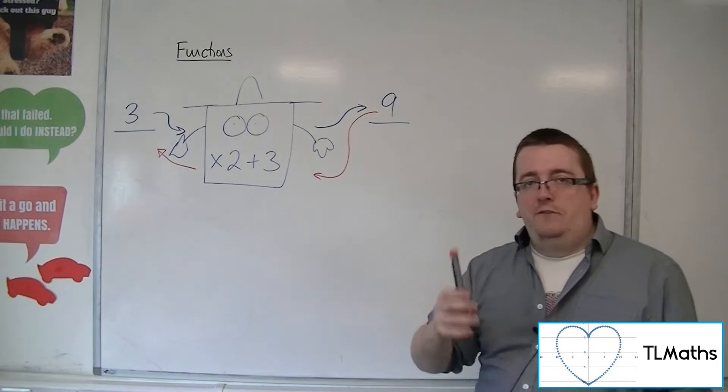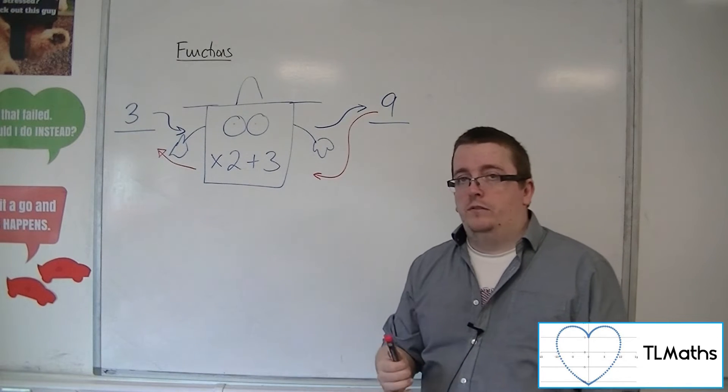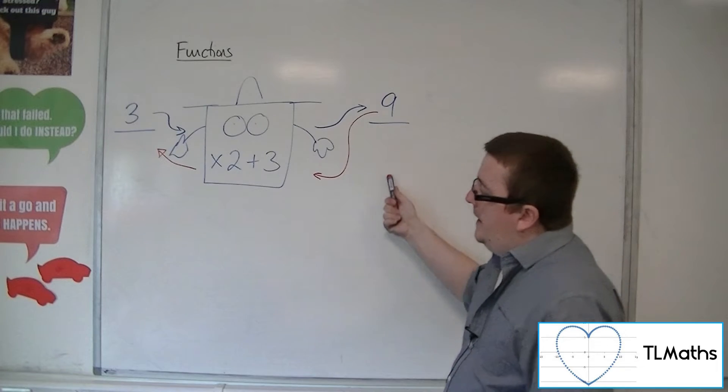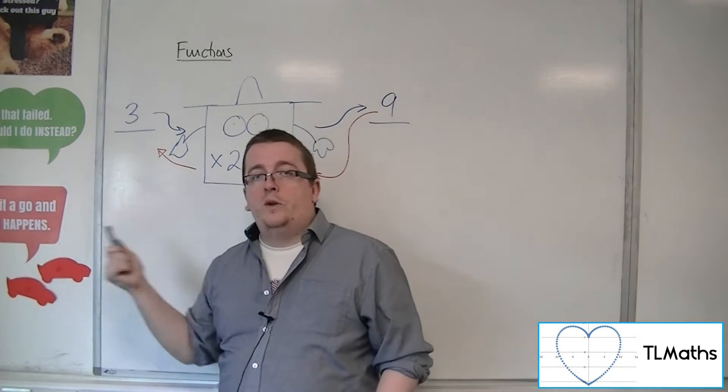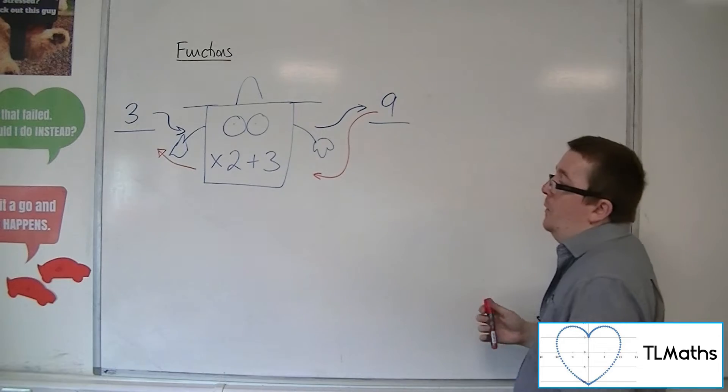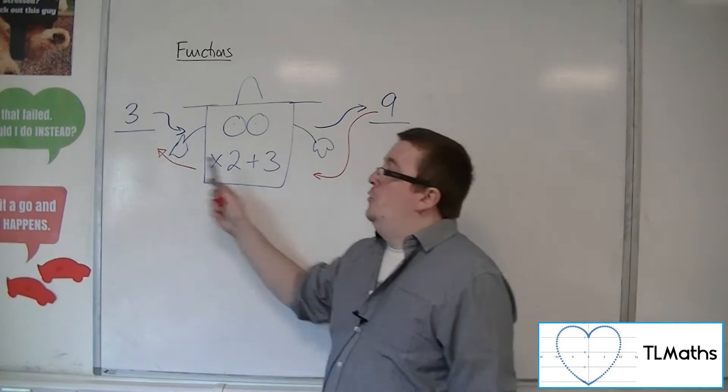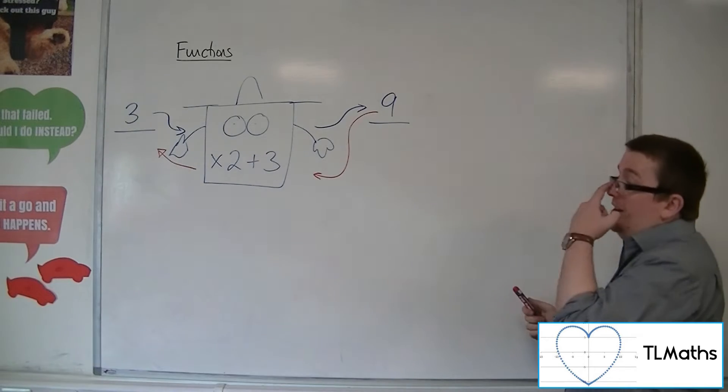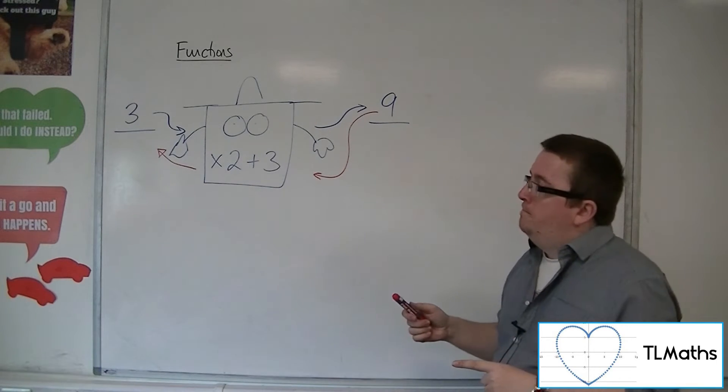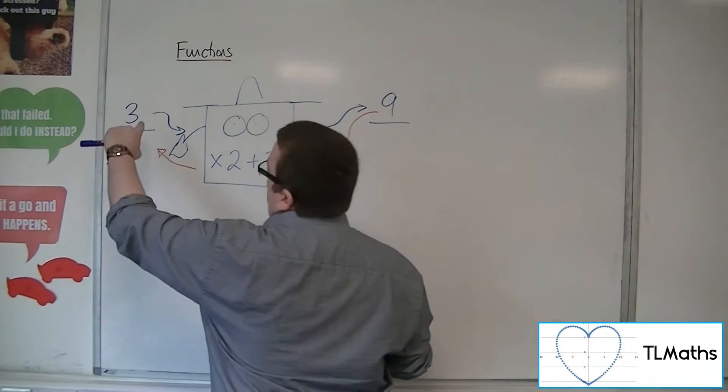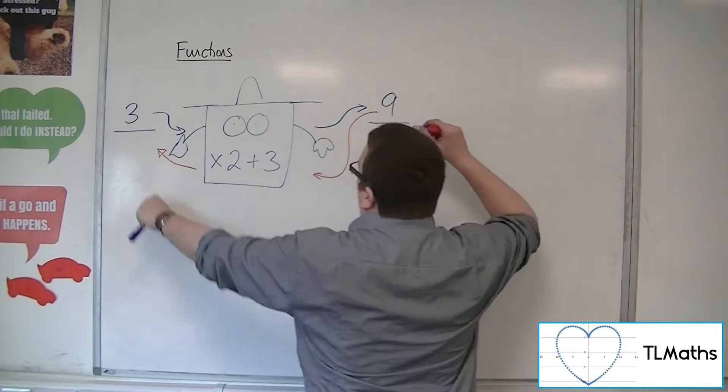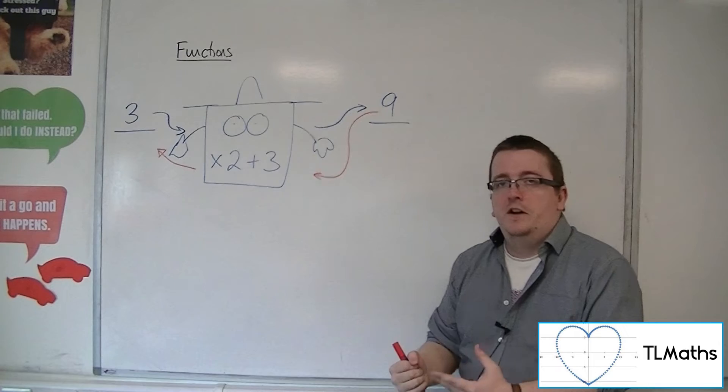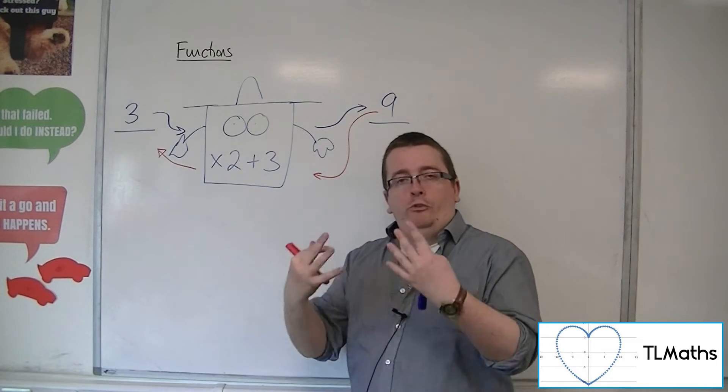In order for this inverse function to be a function, by putting in the value of 9 into my function machine to spit out what it would originally have needed to go in, because I can only have one output value, in order for me to go from one input to one output and from one output to one input, I must have that the original function was one to one.